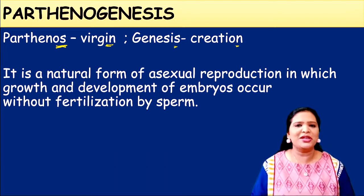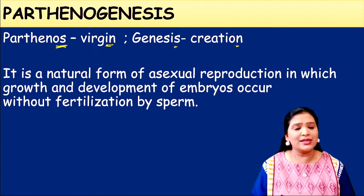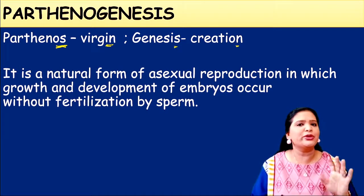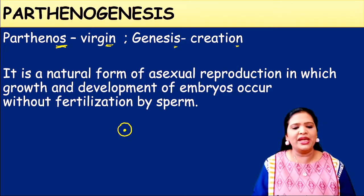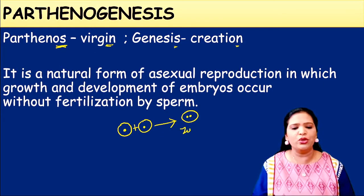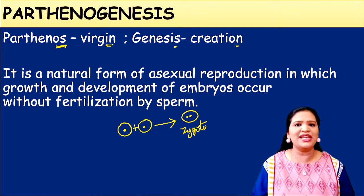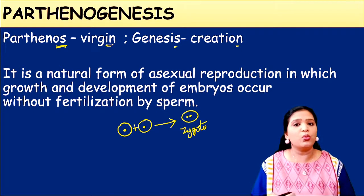Just recall the sexual method of reproduction. In sexual reproduction, there are usually two gametes — one male gamete and one female gamete. A gamete is the reproducing cell of an organism. The female gamete unites with the male gamete in a process called fertilization, resulting in the formation of a zygote.